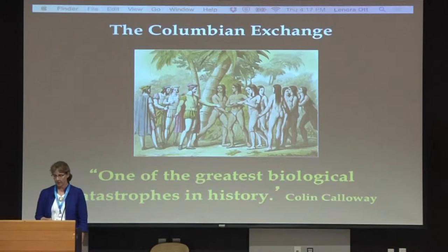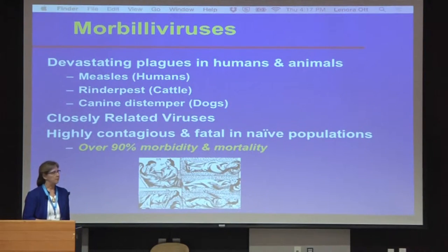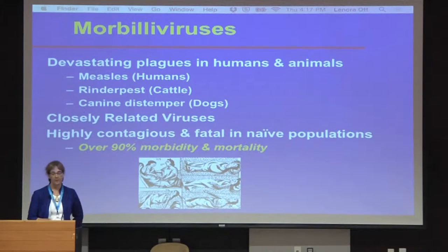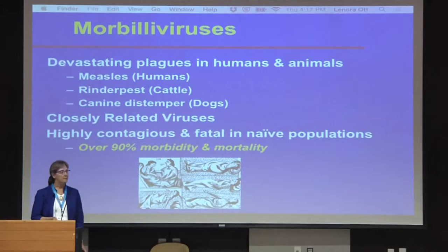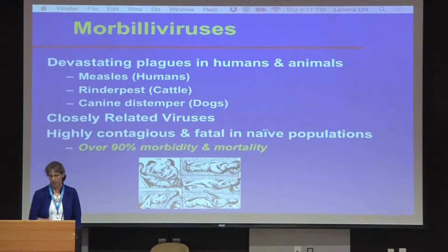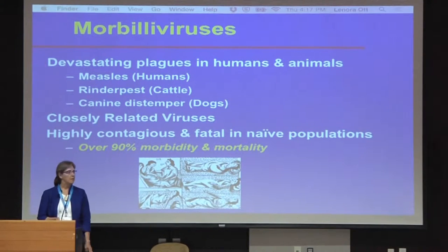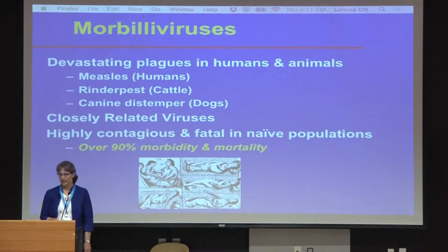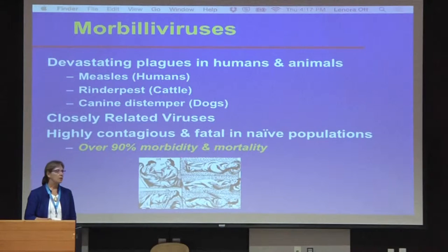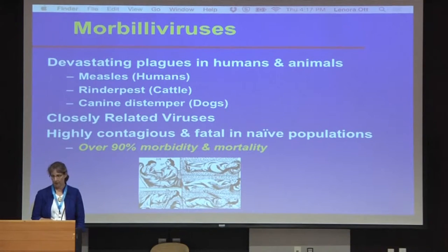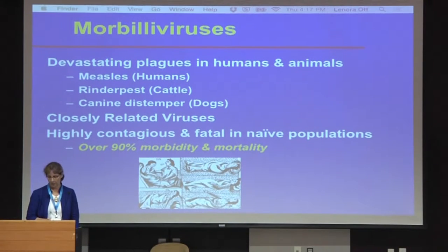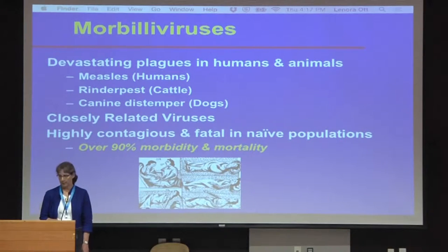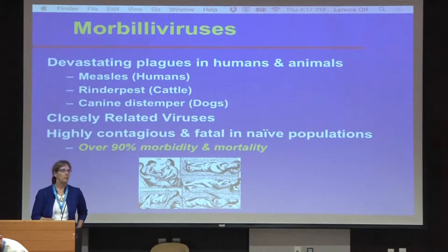So I started to investigate that as a possibility. But first, let me remind you about morbilliviruses. They have caused devastating plagues in both humans and animals. Some of the most famous ones are measles, rinderpest in cattle, and canine distemper in dogs. They are very closely related viruses, extremely contagious, and very fatal in naive populations, with over 90 percent morbidity and mortality.